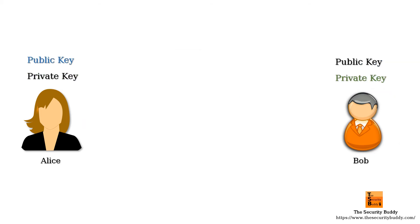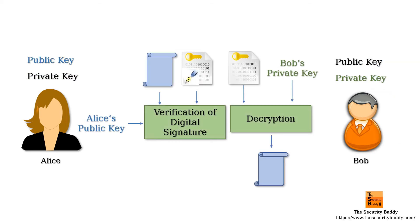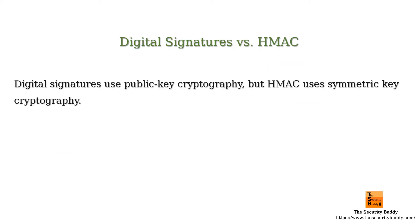When Bob receives the digitally signed message from Alice, he can easily verify the digital signature using Alice's public key. Successful verification of the digital signature implies that Alice has indeed sent the message and the message is unmodified. In other words, the digital signature provides non-repudiation.